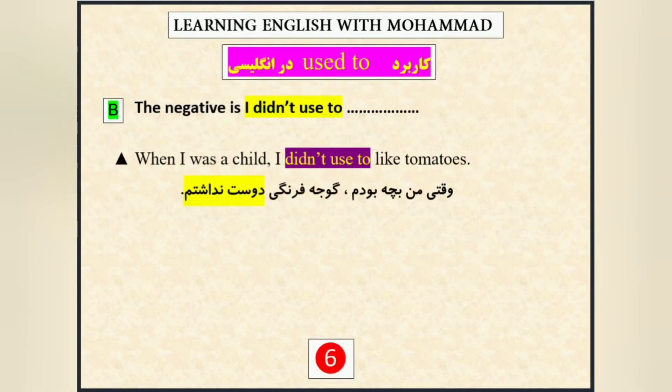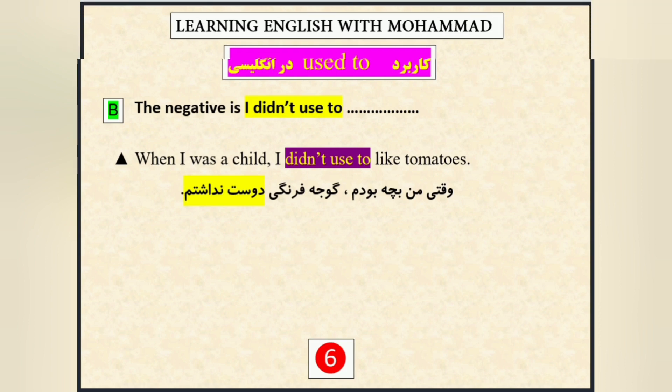حالا بریم قسمت نگتیو — منفیش. میشه I didn't used to. دیگه به used to s اضافه نمیشه. When I was a child، وقتی بچه بودم، I didn't used to like tomatoes. گوجه فرنگی دوست نداشتم. منفی آورده: I didn't used to — بعدش شکل ساده‌ی فعل آورده.